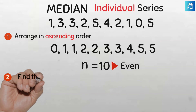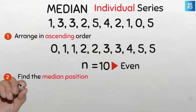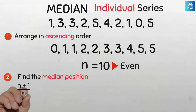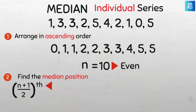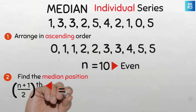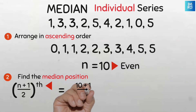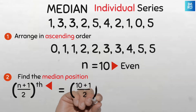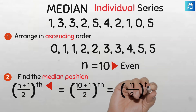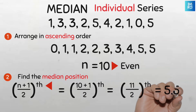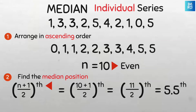To find the position of the median value, we use the same formula: the median position is (n+1)/2. Notice the 'th' — whatever we find is the position of the median, not the median itself. So the median position is (10+1)/2 = 11/2 = 5.5. So our median is going to be at the 5.5th position.